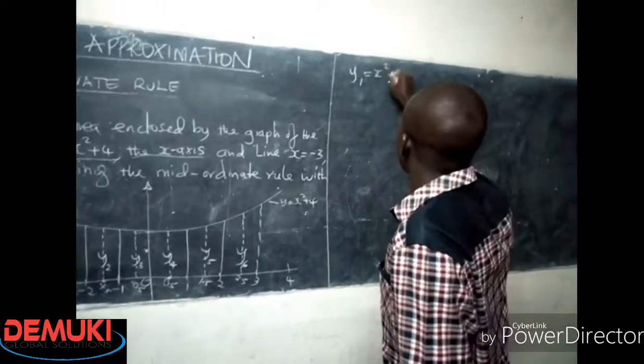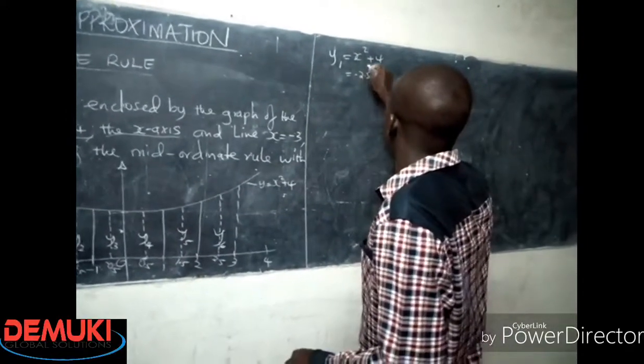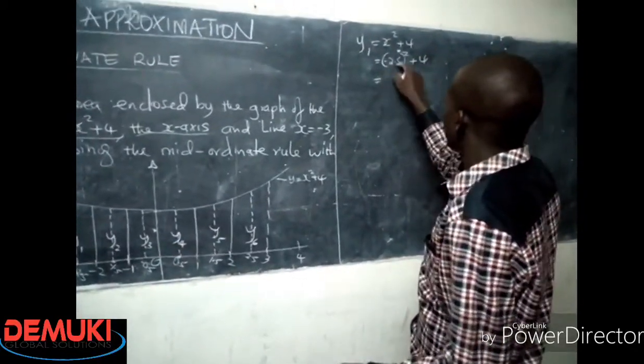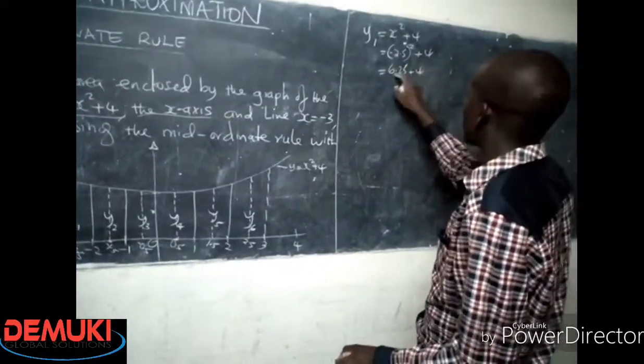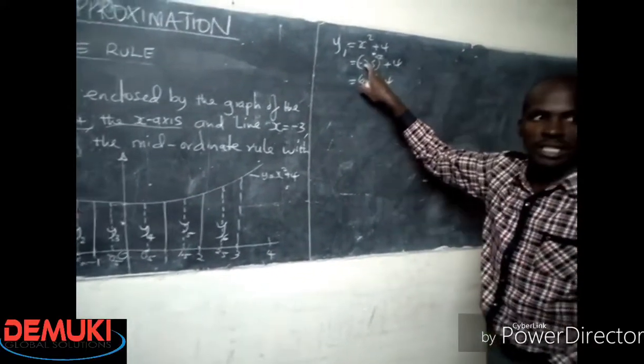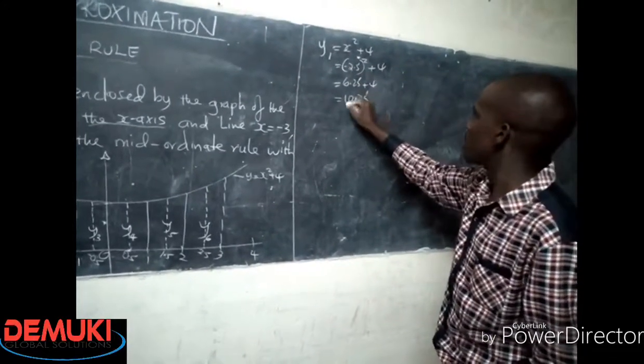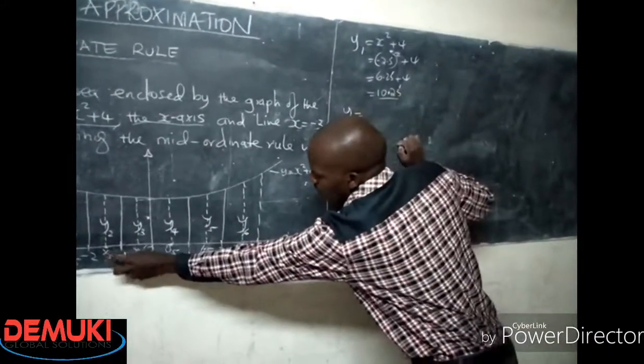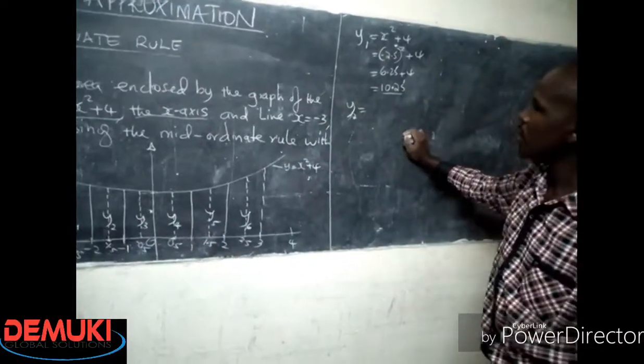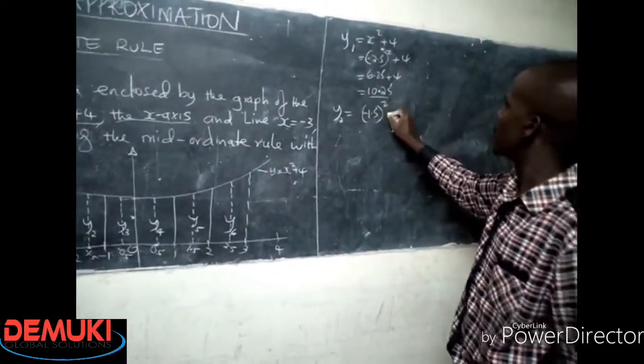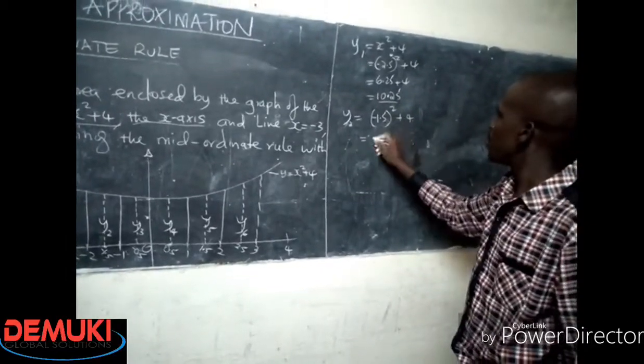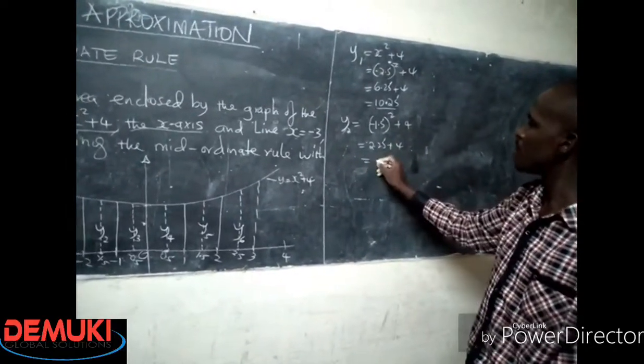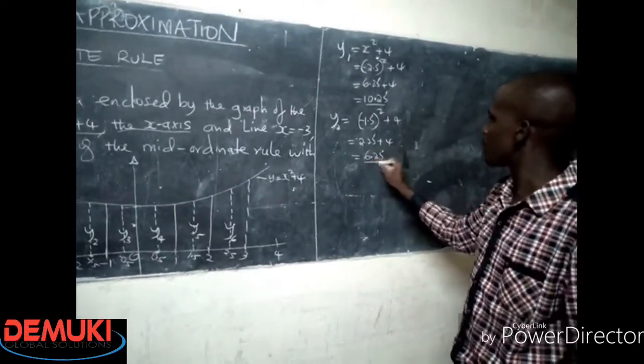So my y1 becomes x squared plus 4, so this becomes negative 2.5 squared because x is negative 2.5, then plus 4. And this gives me 6.25 plus 4, because a negative number squared is positive, so it shall be 10.25. That is my y1. So I get my y2. The value here which corresponds is negative 1.5, so I shall have negative 1.5 squared plus 4.